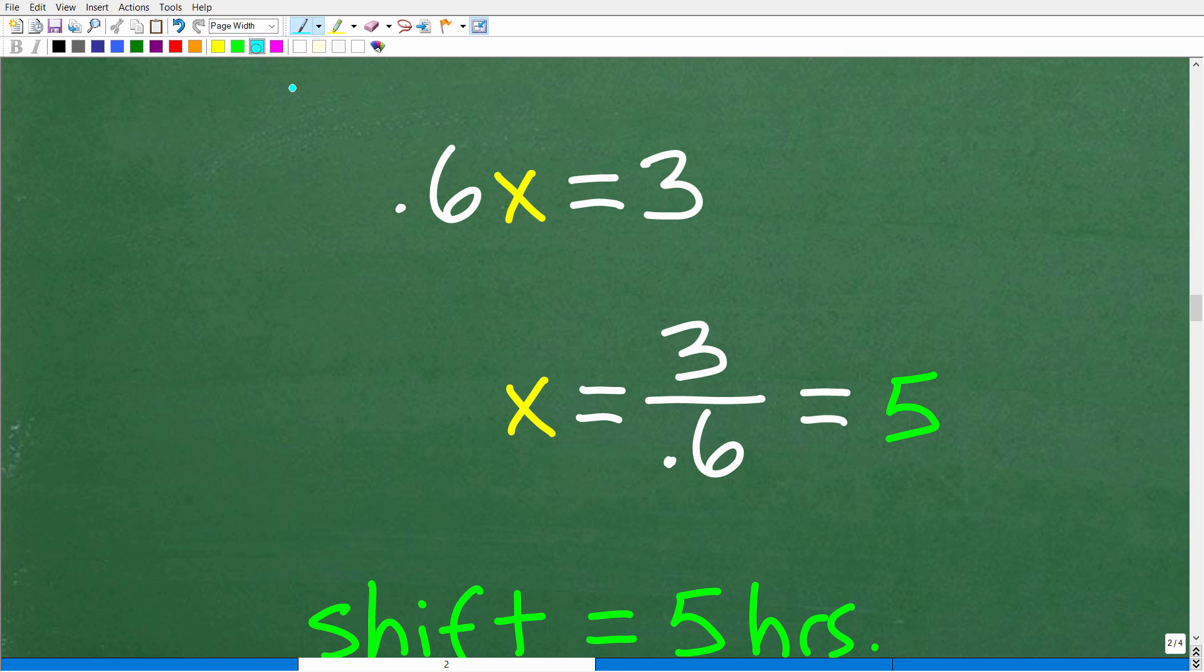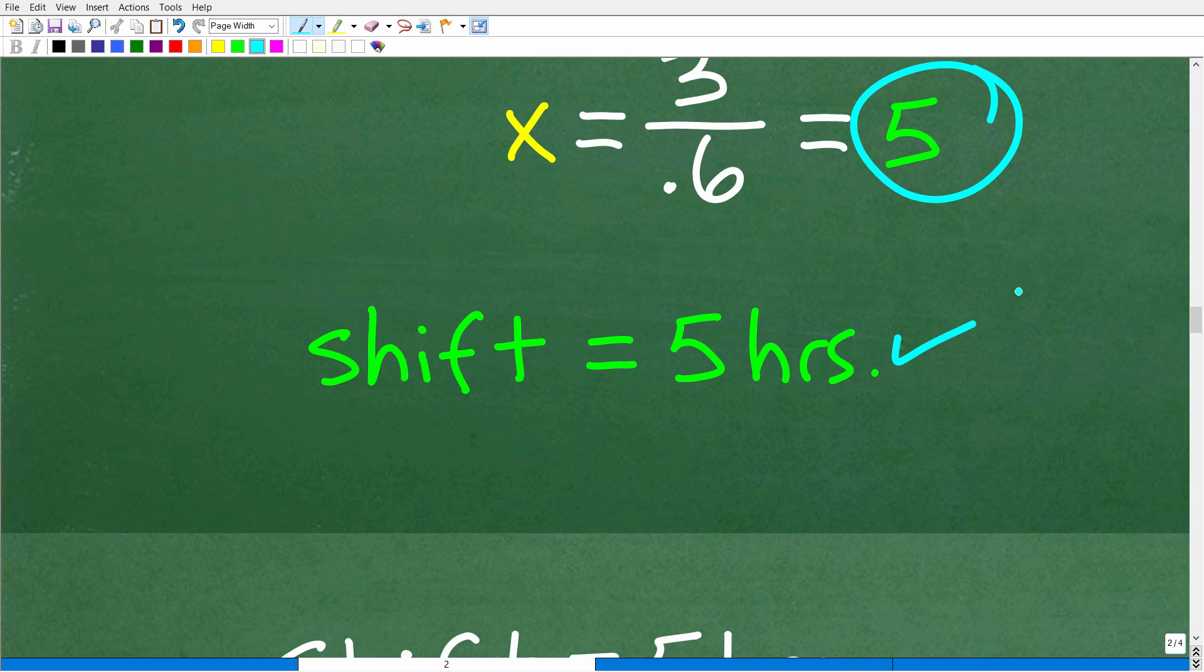Anyways, I just can't help myself, but let's go ahead and finish this up. So 0.6X is equal to three. Let's go and solve for X. So what we need to do here is divide both sides of the equation by 0.6. So we're going to get three divided by 0.6. And in our calculator, when we do that, we get five. All right. So the shift is equal to five hours.